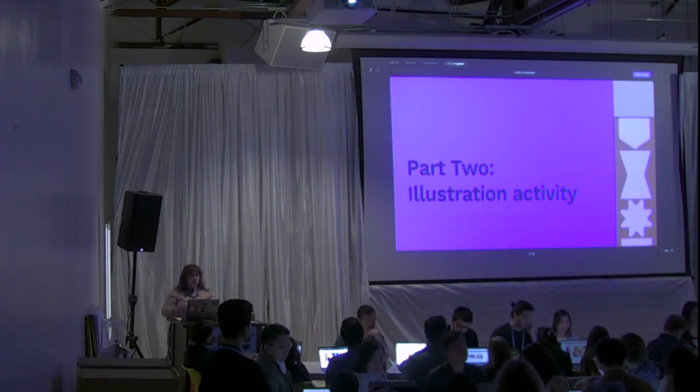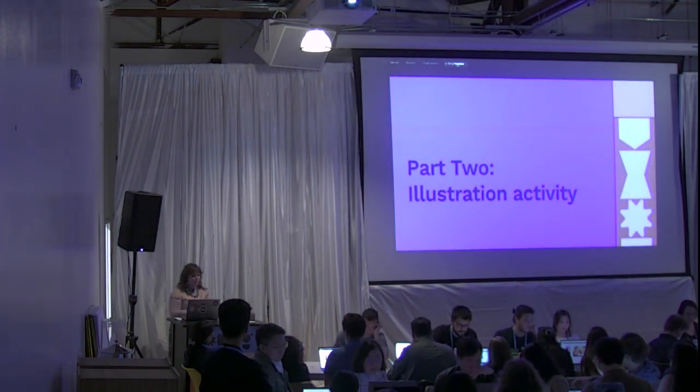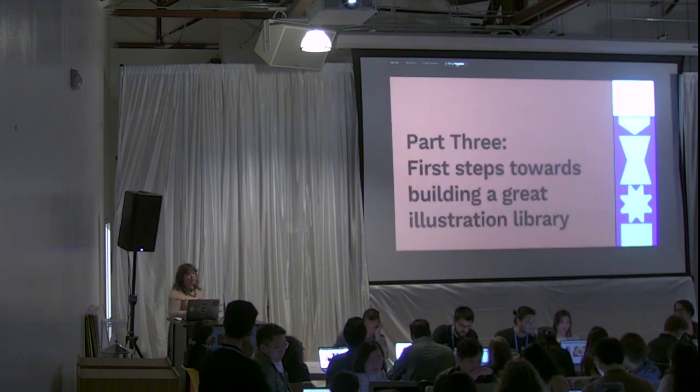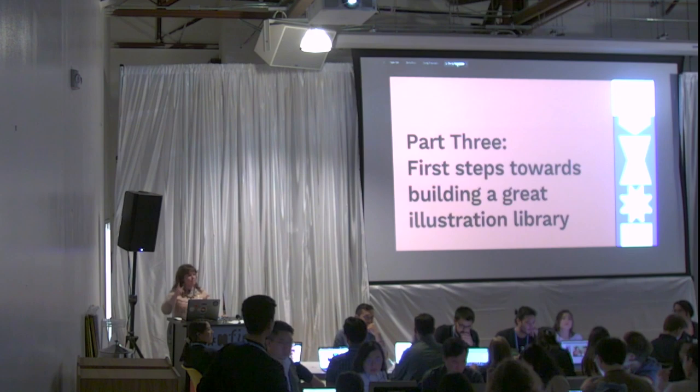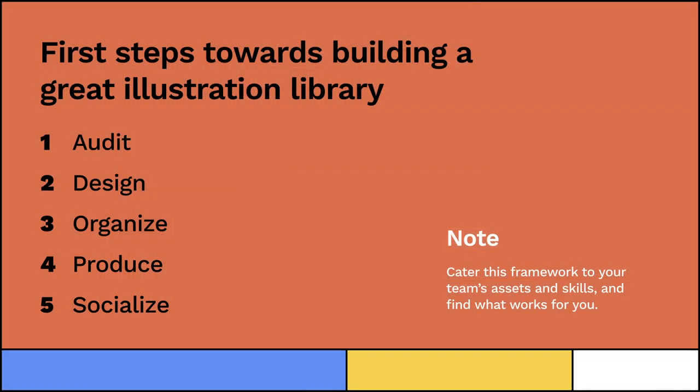I know everyone's interested in how do you build an illustration library — that's what you're here for. Building your library step by step — again, this is a framework, so you should cater this to your team's assets and skills. If you have a full-time illustrator, you might do things differently. If you have no illustrator at all, it might be different than having a full-time person. If you are as enormous as Facebook and Google, it's probably going to be more complicated than this. But this is a framework to help you begin to think about how you might organize that library. It is five steps: audit, design, organize, produce, and socialize.